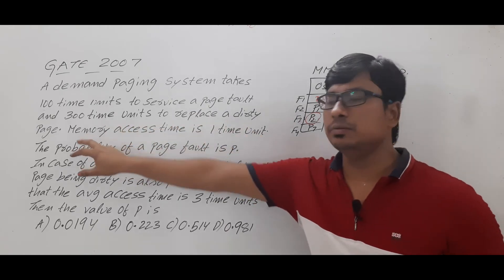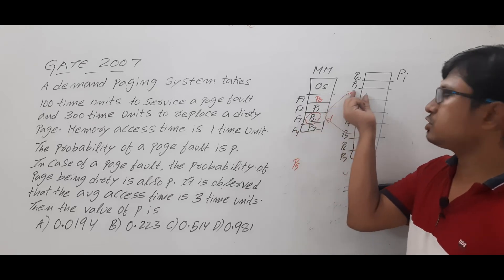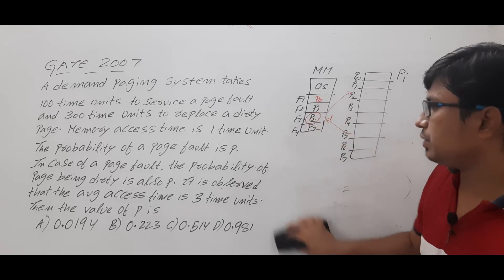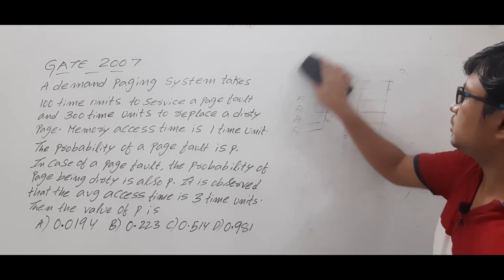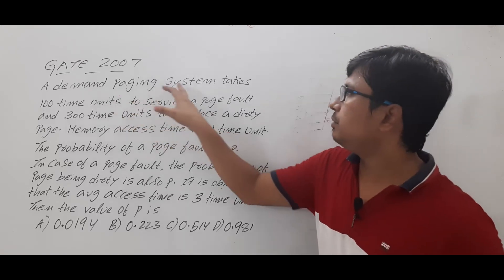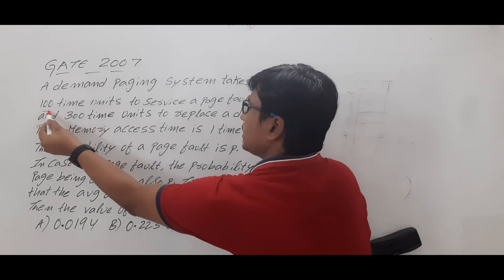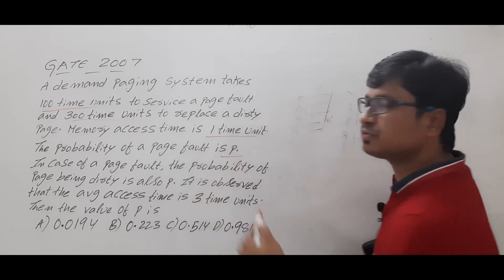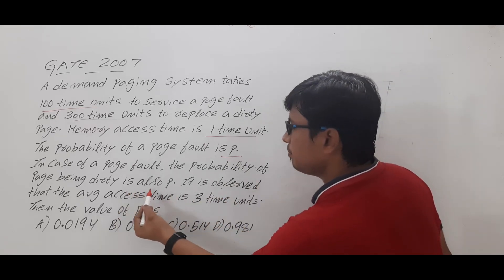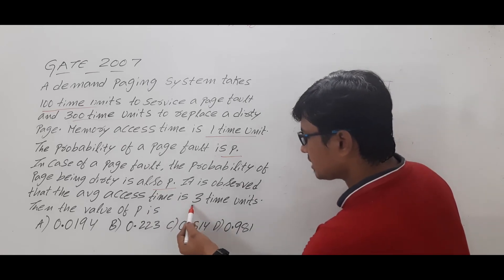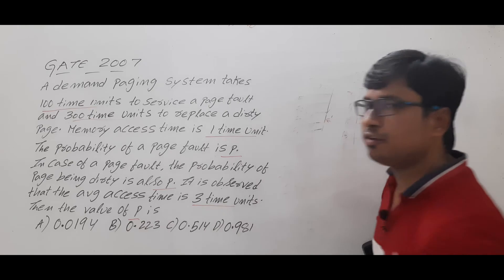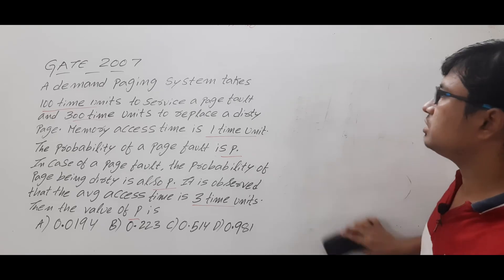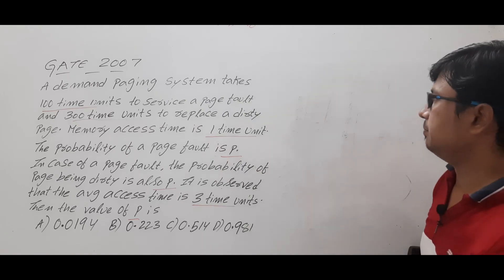That is what the question states: 300 time units to replace a dirty page, meaning page 2 must first be copied to secondary memory, then the new page is loaded. Now to solve the question: they have given memory access time as 1 unit and the probability of a page fault as P. To compute the effective memory access time, we first need to compute the page fault service time, which is not given directly.